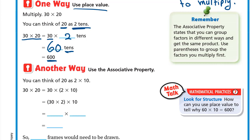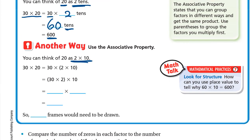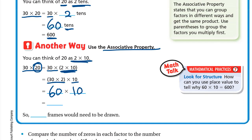Another way is to use the associative property. Think of 20 as 2 × 10, so 30 × 20 becomes 30 × 2 × 10. Using the associative property, group 30 and 2 first: 30 × 2 is 60. Then 60 × 10 — multiply by 10 by adding one zero — gives 600. So 600 frames would need to be drawn.